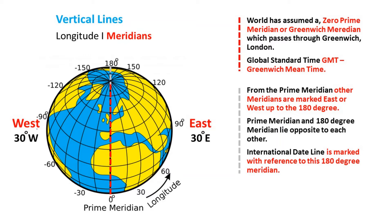There is another special longitude: the international date line, which is the 180 degree meridian. The international date line is marked with reference to this 180 degree meridian.